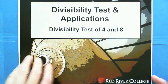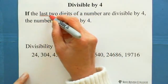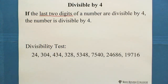Divisibility test for 4: if the last two digits of a number are divisible by 4, the number is divisible by 4. We need to look at the last two digits. This is very different from divisibility by 2. For divisibility by 2, we look at the last digit to see if it is even. But for the divisibility test for 4, we need to look at the last two digits. If the number made from the last two digits is divisible by 4, then the number is divisible by 4.